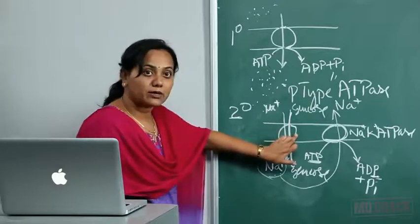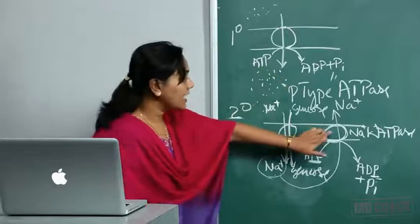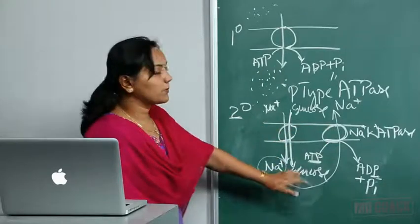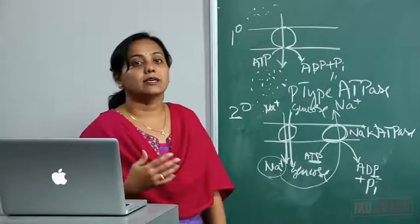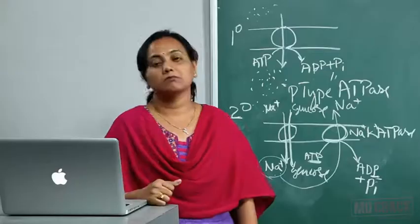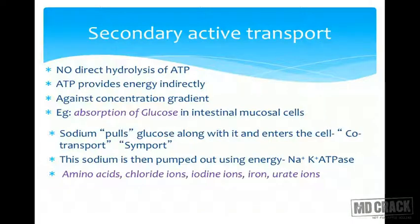This transporter does not itself have ATPase activity; another substance is required for the transport. This mechanism is not only for glucose — it is also used for amino acids, chloride ions, iodine ions, iron, urate, and other substances. All these types of transport require energy in a secondary manner.